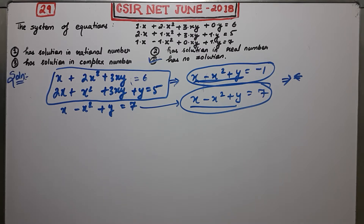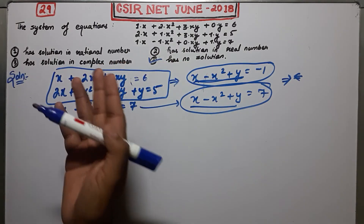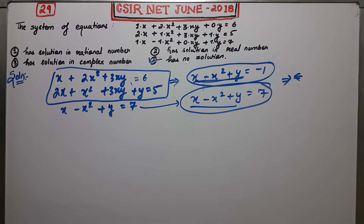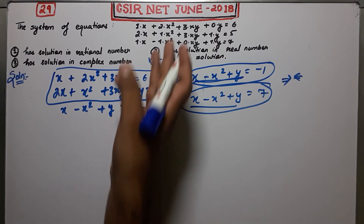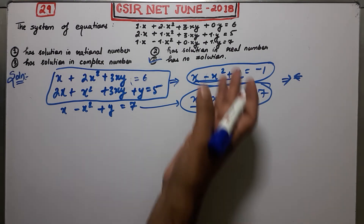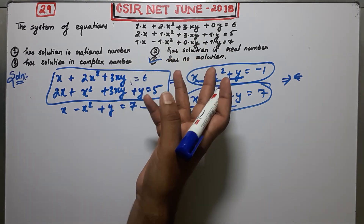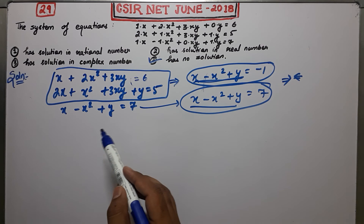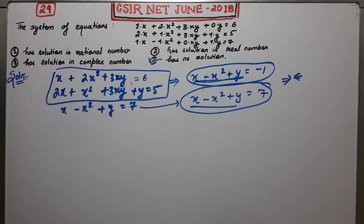Since this is an exam, you can also predict the answer: this type of system can never have a solution, because if it did, there would be no point in asking the question. There is no short method to solve these equations otherwise, so by prediction you can directly mark the fourth option. But it is also not very difficult to give proper reasoning — just subtract two equations and you get the contradiction. Thank you guys.